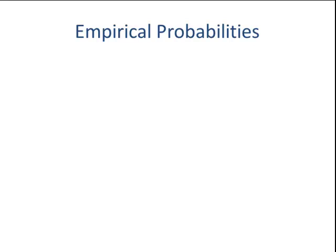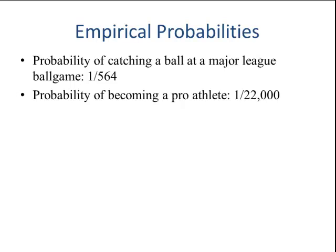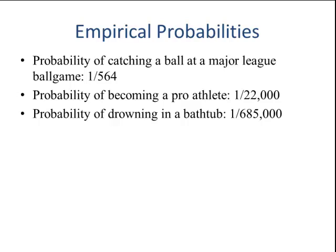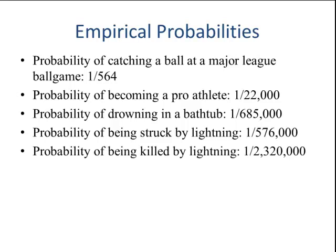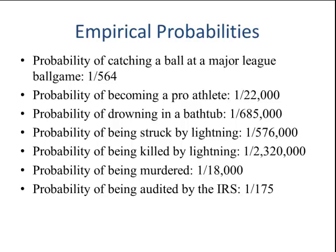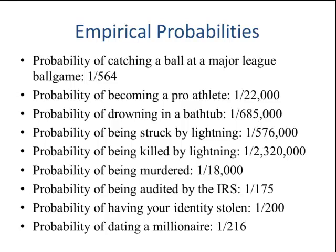Here's some more empirical probabilities. The probability of catching a ball at a major league game is 1 out of 564. The probability of becoming a pro athlete is 1 out of 22,000. The probability of drowning in a bathtub is 1 out of 685,000. This is what we mean by probabilities that are being estimated using previous information. Probability of being struck by lightning is 1 out of 576,000. Being killed by lightning is 1 out of 2,320,000. Probability of being murdered is 1 out of 18,000. Being audited by the IRS is 1 out of 175. Probability of having your identity stolen is 1 out of 200. And the probability of dating a millionaire is 1 out of 216.